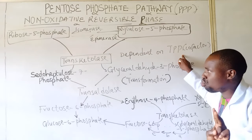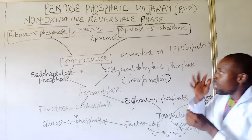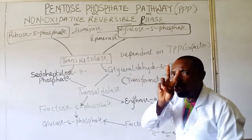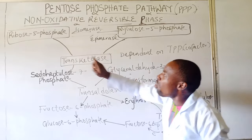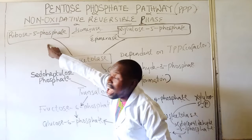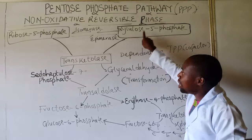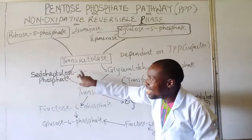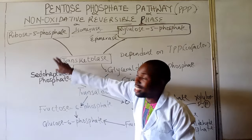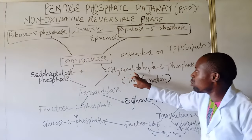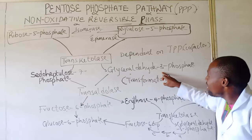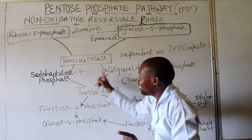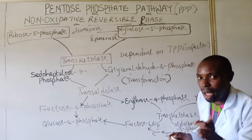One molecule of xylulose-5-phosphate formed in the first step combines with a single molecule of ribose-5-phosphate, and the enzyme involved is called the transketolase. This transketolase is an enzyme with a cofactor dependent on thiamine pyrophosphate. In this reaction, two carbons are removed from the xylulose-5-phosphate and added to the ribose-5-phosphate to give what we call sedoheptulose-7-phosphate, while the remaining three carbons give glyceraldehyde-3-phosphate. This is the second step.